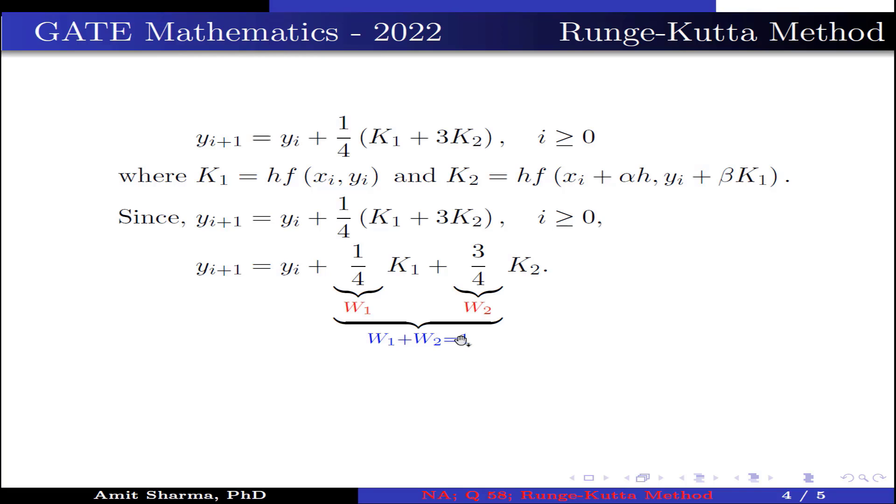The sum of w1 + w2 = 1. We also know that the value of w2 is 1/(2α). Now substituting the value of w2, we get 3/4 = 1/(2α).